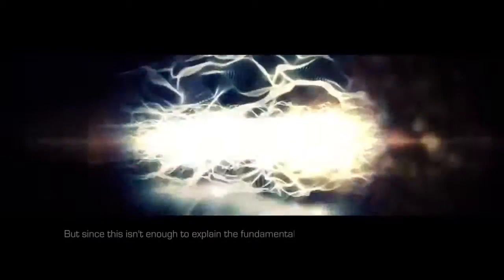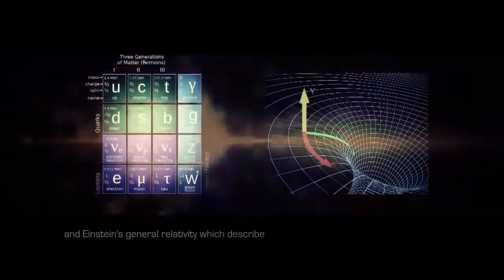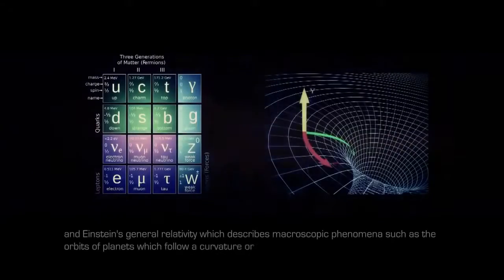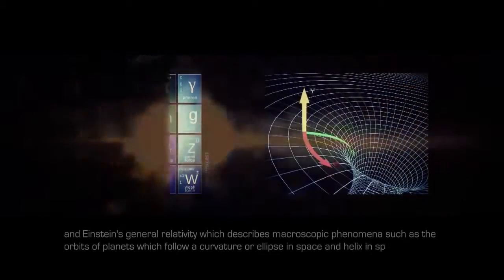But since this isn't enough to explain the fundamental forces, we are required to use different models. This includes the standard model, which mediates the dynamics of the known subatomic particles through force carriers, and Einstein's general relativity, which describes macroscopic phenomena such as the orbits of planets, which follow a curvature or ellipse in space and a helix in spacetime. But Einstein's model of spacetime doesn't hold up on quantum levels, and the standard model needs additional force carriers to explain the origin of mass. Without success, a unification of both models or theory of everything has been subject of much research.